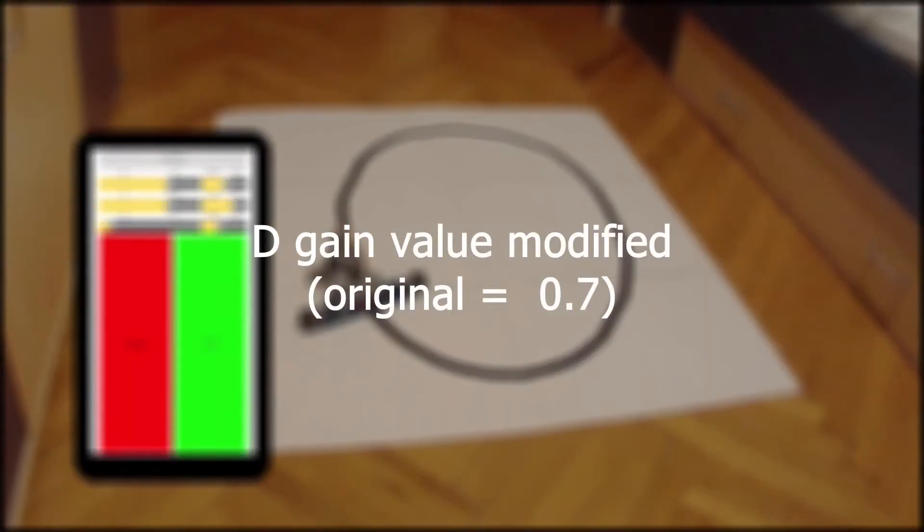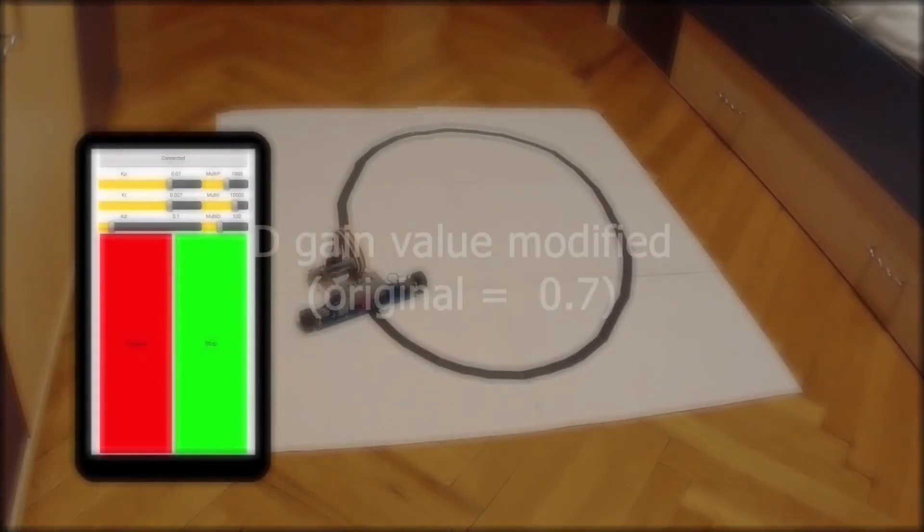Because the integral term doesn't have a noticeable impact on the control system, I will not discuss its tuning. Next, we'll move on to the derivative term. The ideal value for its gain would be around 0.7 for this case.